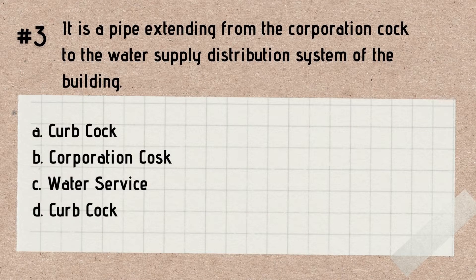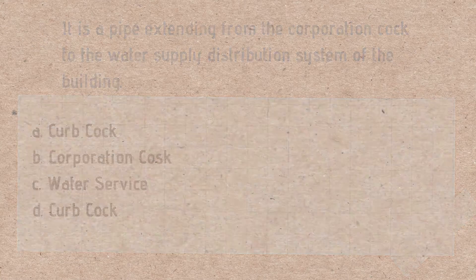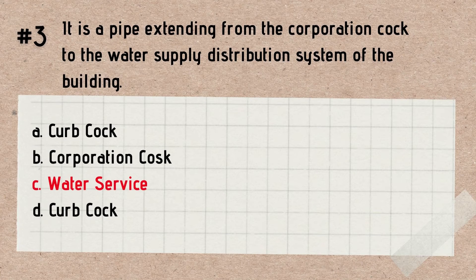Question number 3. It is a pipe extending from the corporation cock to the water supply distribution system of the building. A. Curb cock. B. Corporation cock. C. Water service. D. Curb cock. Answer: Water service. Remember, water service is a pipe extending from the corporation cock to the water supply distribution system of the building.